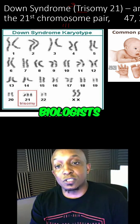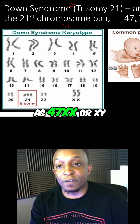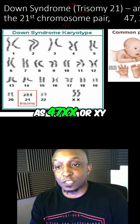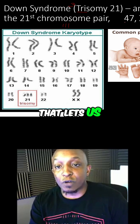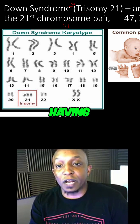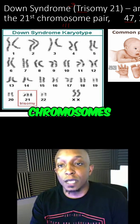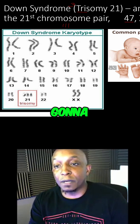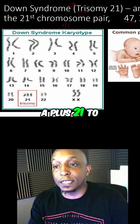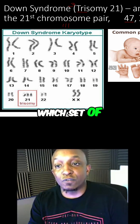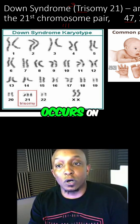The way biologists or scientists write it up, they write it as 47 XX or XY plus 21. So that lets us know that instead of having our normal 46, we have 47 chromosomes, and it's going to be male or female. The plus 21 tells us which set of chromosomes that disorder occurs on.